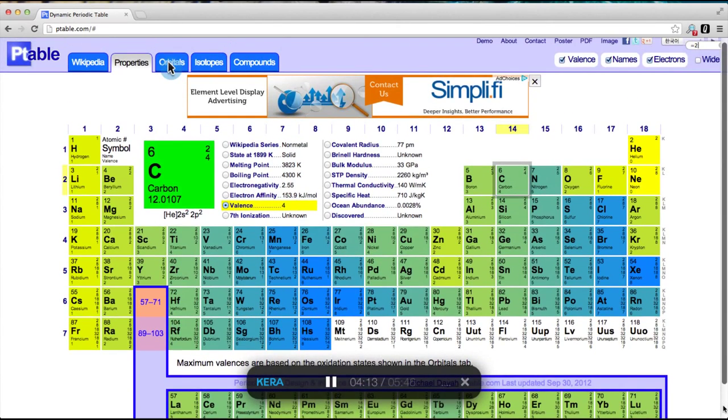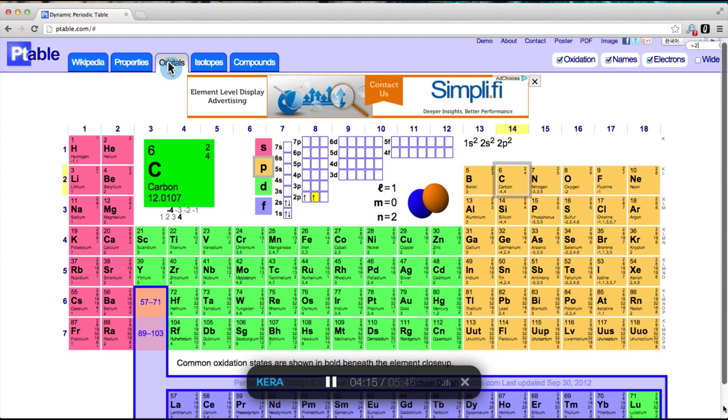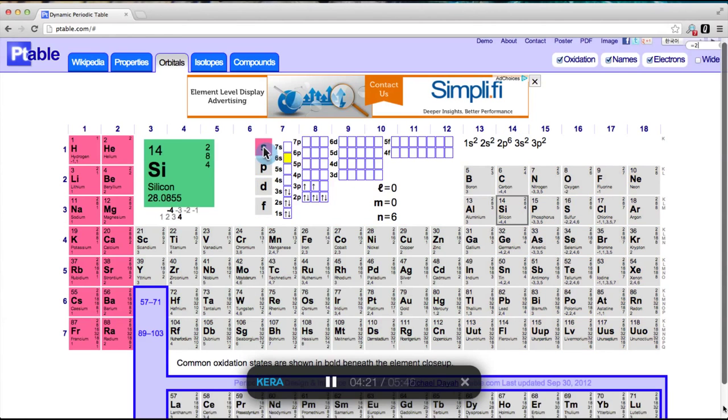The orbitals tab centers on properties which derive from the atom's electron arrangement. Clicks in this tab also lock elements, rather than opening any windows. Instead of series being colored, the S, P, D, and F blocks are colored. And helium moves next to hydrogen to join the S block. In place of atomic weight, common oxidation states are shown. All oxidation states are visible beneath the close-up, with the most common in bold.